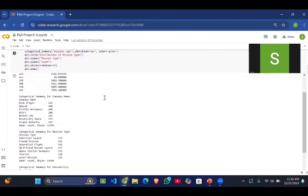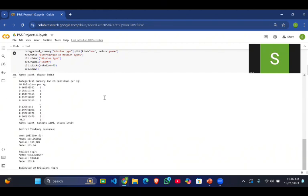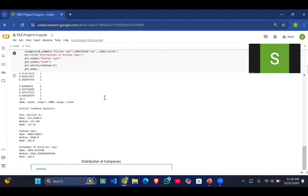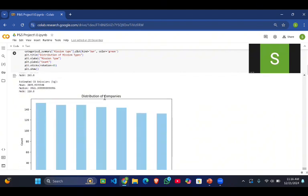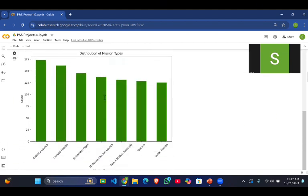As we can see, for the categorical summary of our data, we had the company names and the number of missions they conducted. Then we calculated the average cost per company and the payload per kg they carried. We have shown them through data visualization techniques such as bar graphs.